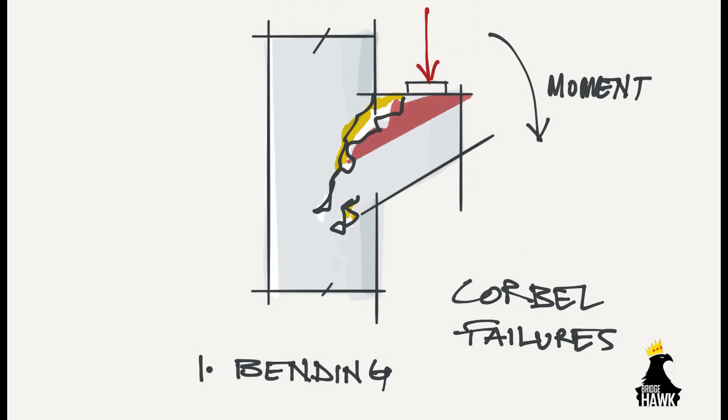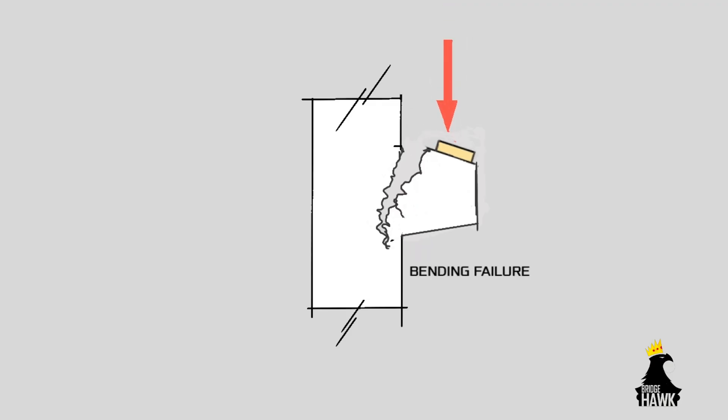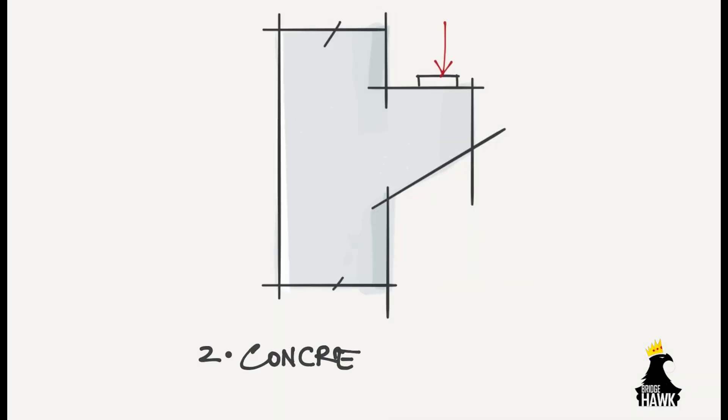As shown, it then travels down till the end of the corbel section. This crack gets bigger and eventually it fails in bending. Number two: